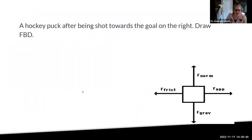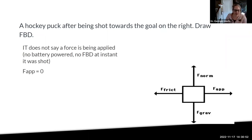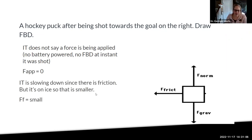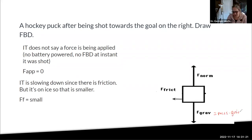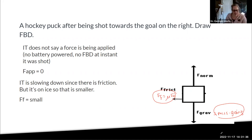A hockey puck after being shot towards the goal on the right — note it says after being shot. There is no force applied, because a force applied only exists at the instant of contact, just like throwing a football: once it's in the air, there's no more force applied. The puck still has friction, but it's on ice so the force of friction is a tiny arrow. Force of gravity = mass × gravity, and force of friction = mu × force of normal. These two equations are your bread and butter — make sure they're on your formula sheet.